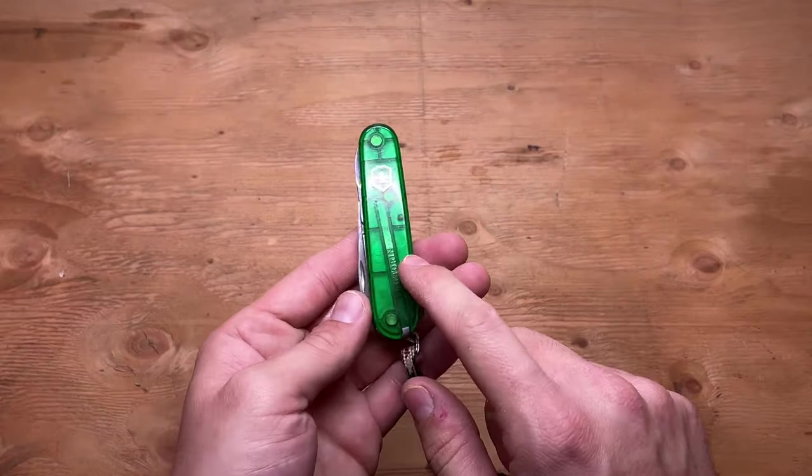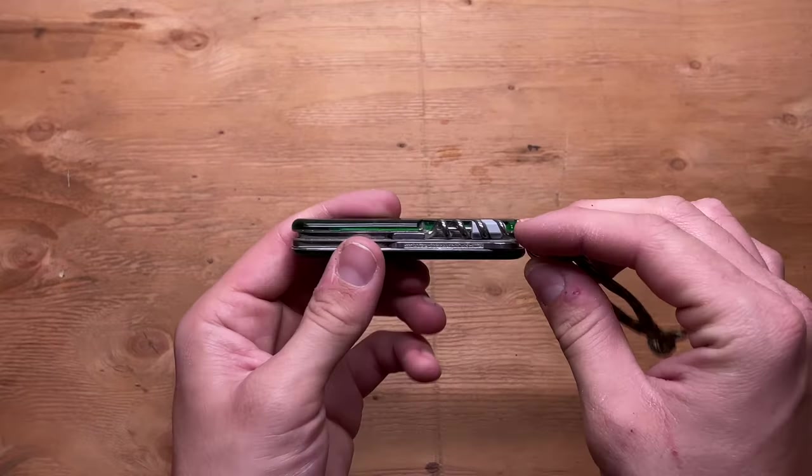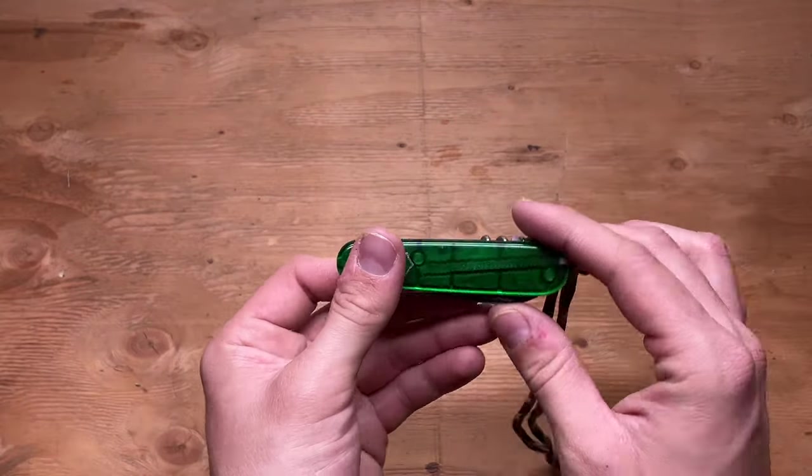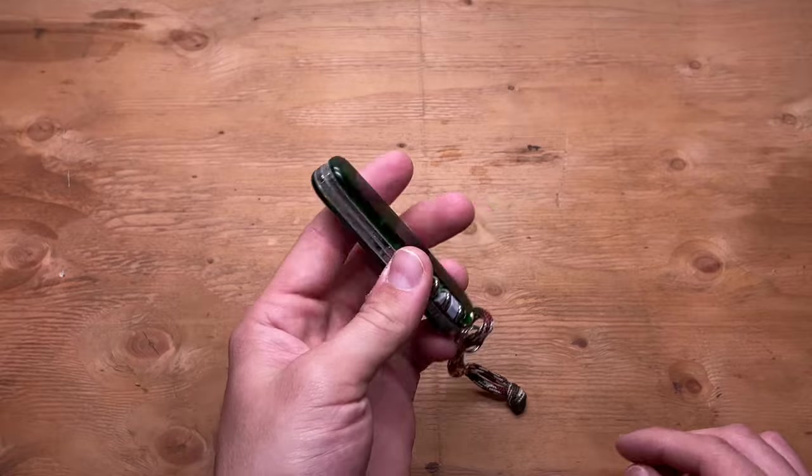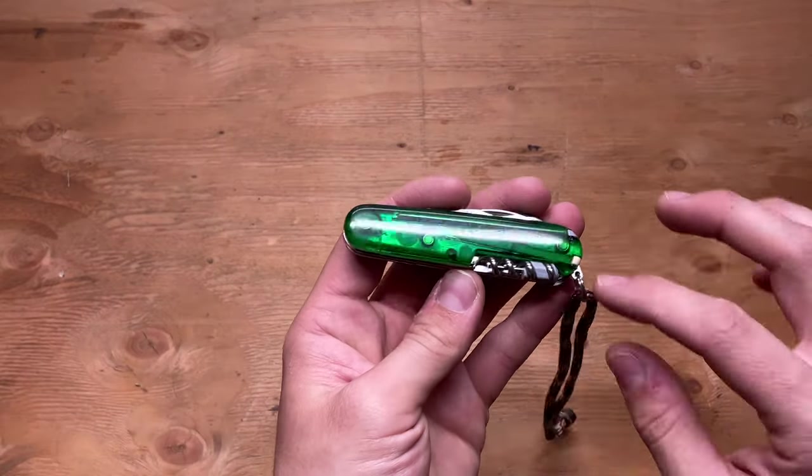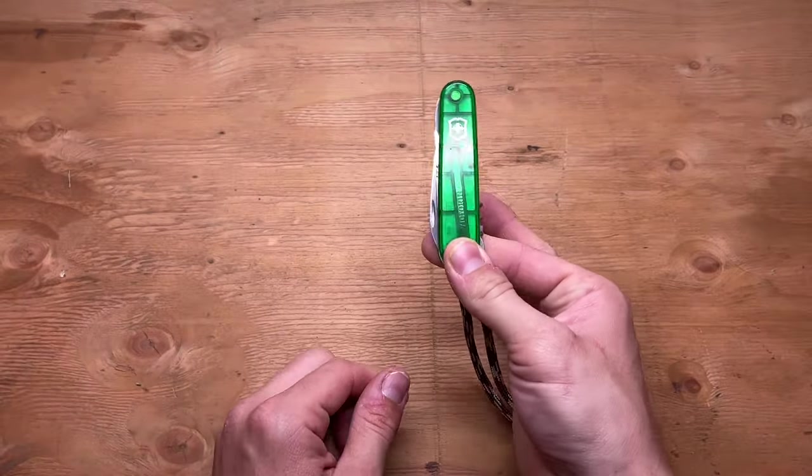So for all of you wondering, I don't think you can get the Compact with green scales. I actually switched my scales out, these were originally red. I switched them out from my Victorinox Huntsman actually, and they fit perfect. So I love the green with the green paracord, just absolute, I love it.